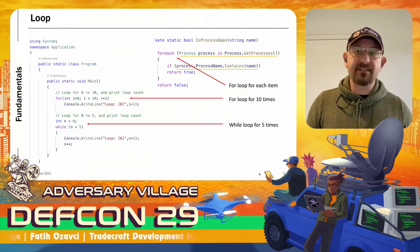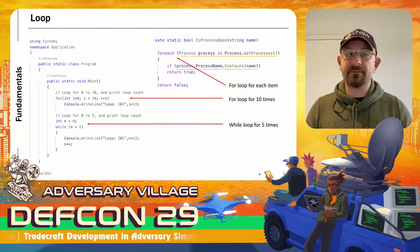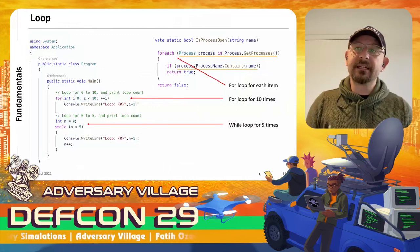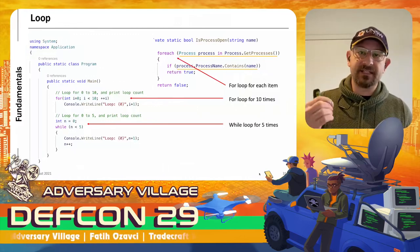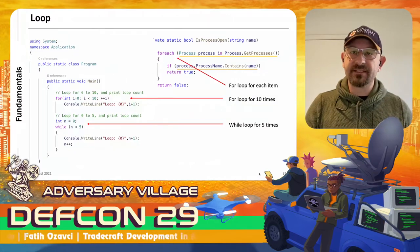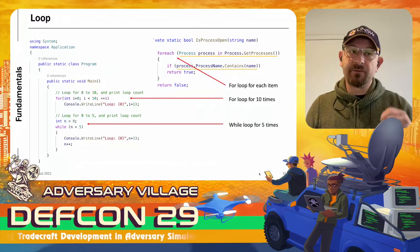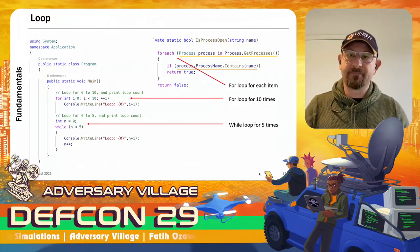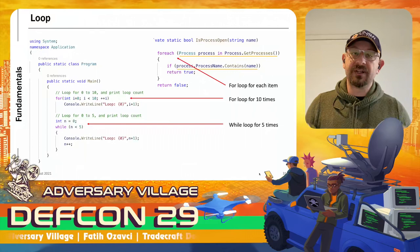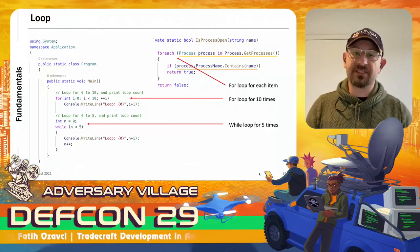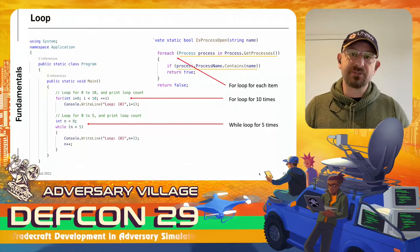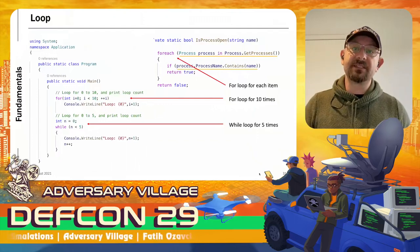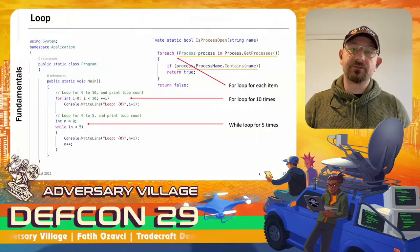Loops are similar to other languages and can be implemented using for, while, or foreach. Foreach is useful for objects — it gets items from an array, list, or dictionary and starts working on them. While and for look for a condition, for example incrementing an integer until a condition is met, or running a loop while a condition is true. These types of loops are useful when waiting or processing objects such as a dictionary or list.